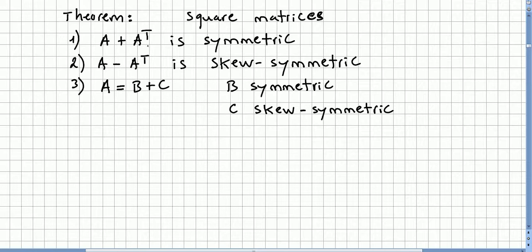One: A plus A transpose is symmetric. Two: A minus A transpose is skew-symmetric. Three: A equals B plus C, where B is symmetric and C is skew-symmetric.